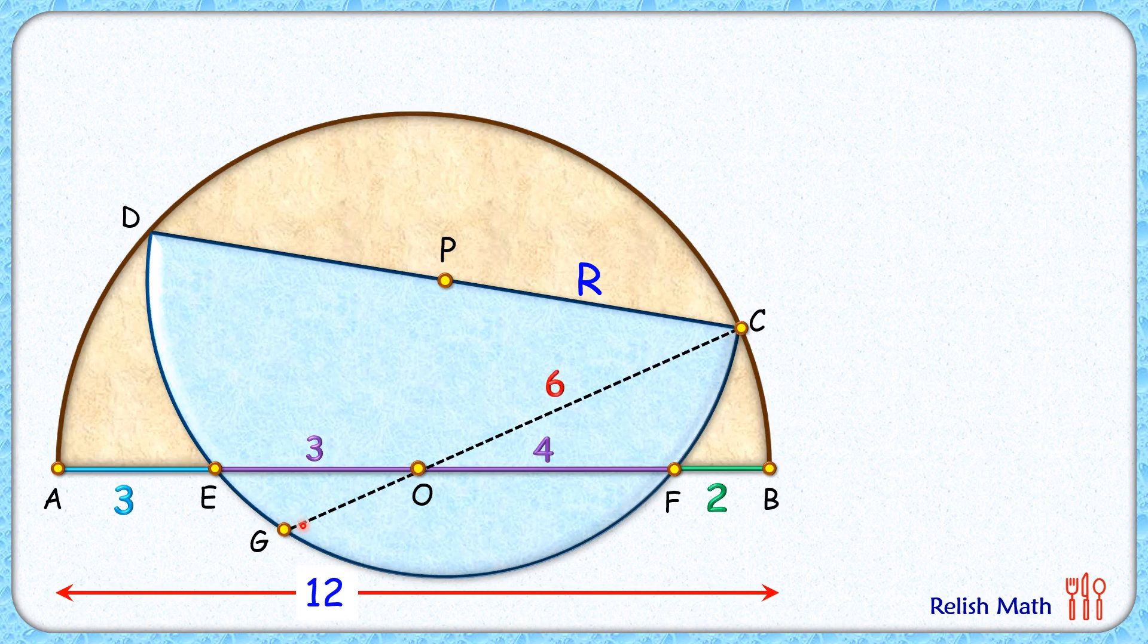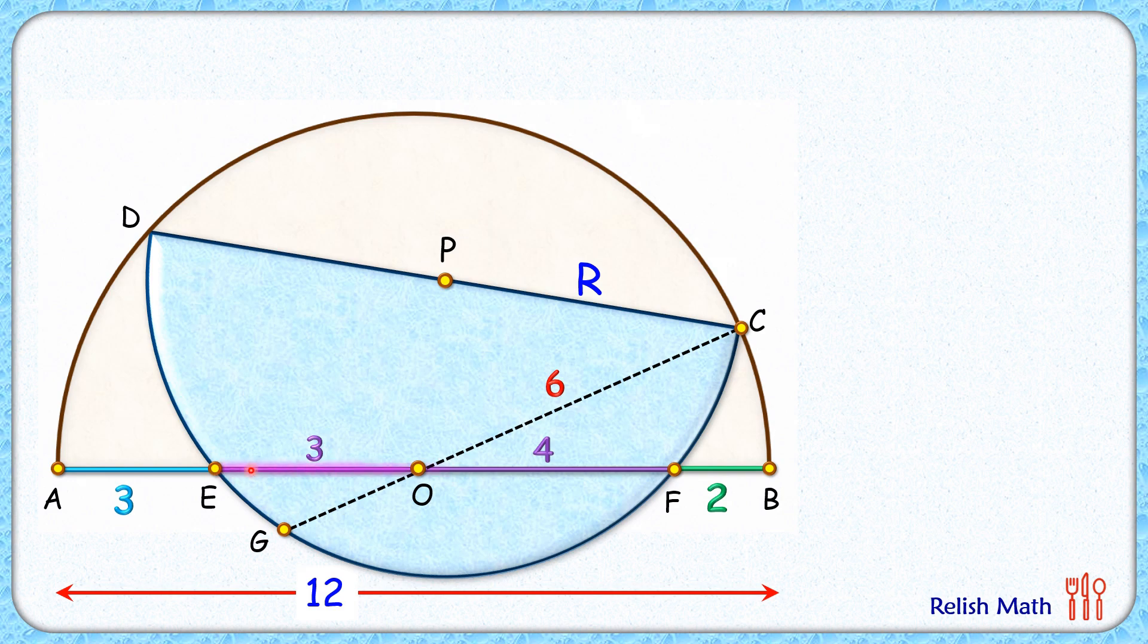For GO length, let's concentrate only on the blue semi-circle. Here we have two chords EF and CG intersecting at point O. So by power of point theorem, we get GO times OC is EO times OF.